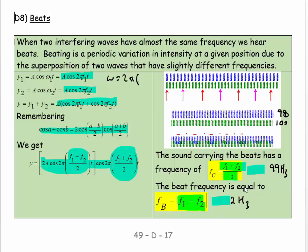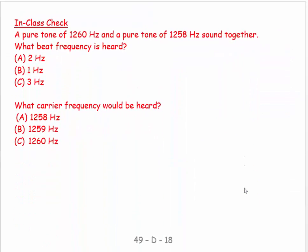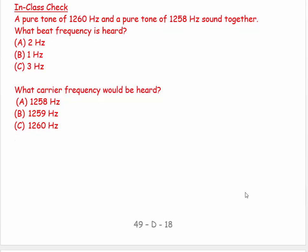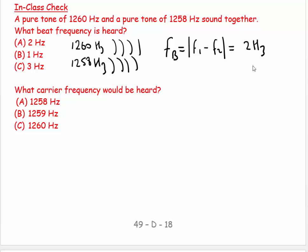Let's do a couple of examples. A pure tone of 1260 Hertz and a pure tone of 1258 Hertz sound together. What beat frequency is heard? The frequency of the beat equals the absolute value of f₁ minus f₂. If you get a negative number, you write it down as a positive number, and that will be 2 Hertz.